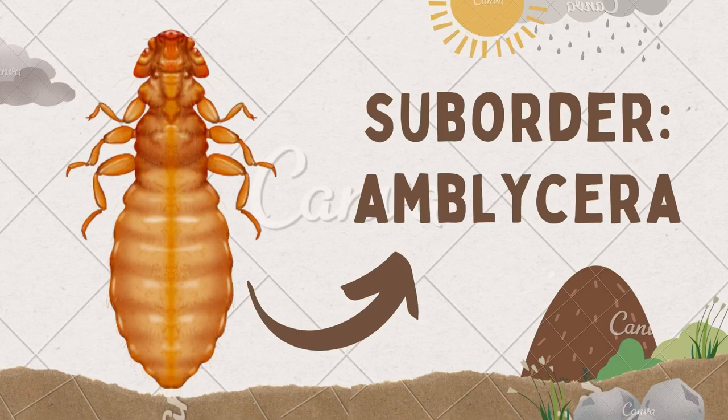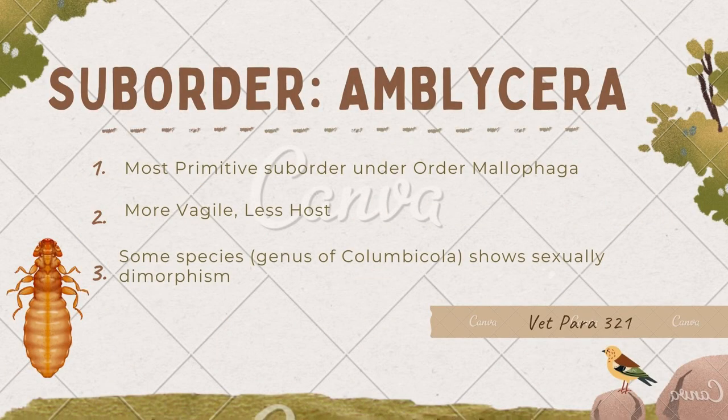Suborder Amblycera is the most primitive suborder under Mallophaga, more vagal, less host specific. Some species, like the genus Columbicola, show sexual dimorphism. The Amblycera have retained more of the habits and morphological characteristics of ancestral free-living forms.